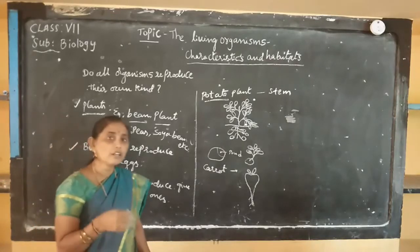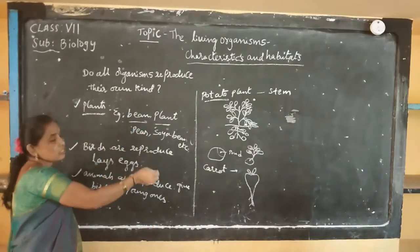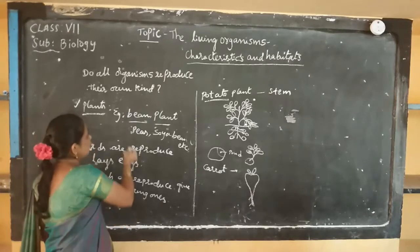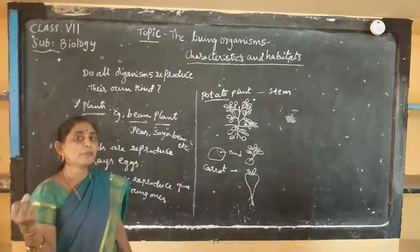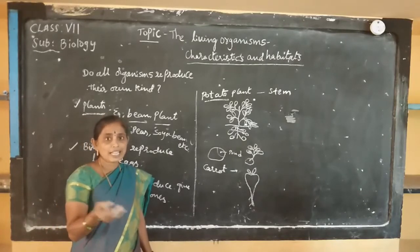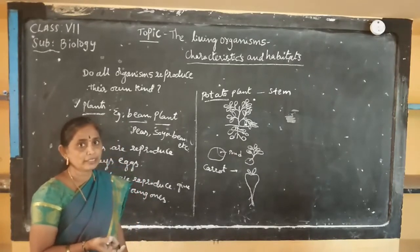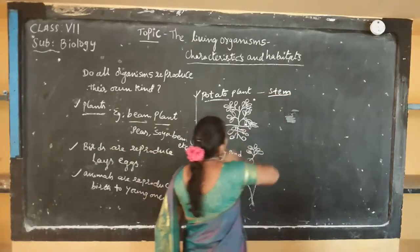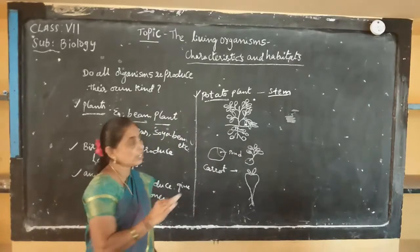All organisms reproduce their own kind, but the mode of reproduction is different in plants and in animals. Plants like bean seed germinate into a new plant under favorable conditions like air, water, sunlight, and soil. Potato is reproduced through the stem. Not only potato — even turmeric, ginger, and sugar cane also reproduce through the stem.